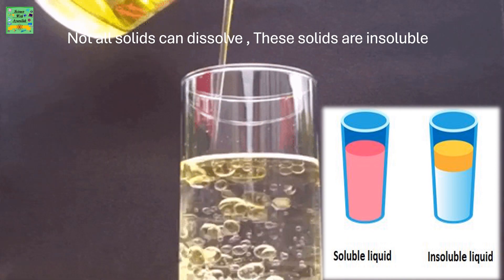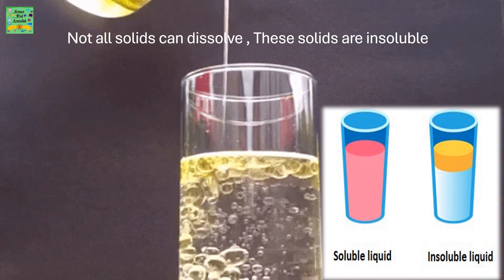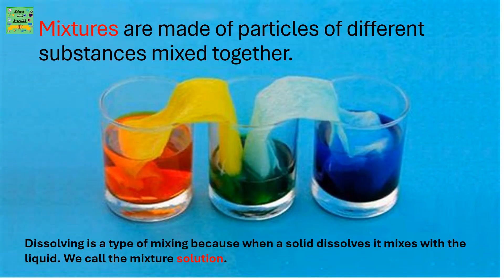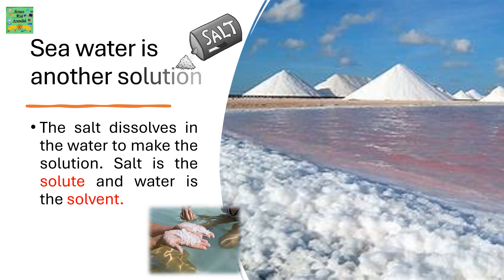But please remember that not all solids can dissolve — these solids are insoluble. Mixtures are made of particles of different substances mixed together. Dissolving is a type of mixing because when a solid dissolves, it mixes with the liquid. We call the mixture a solution. Did you know that sea water is another solution? This is because the salt is dissolved in the water to make a solution. Salt is the solute and water is the solvent.